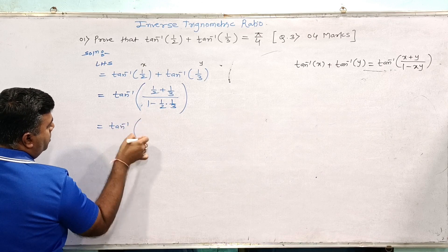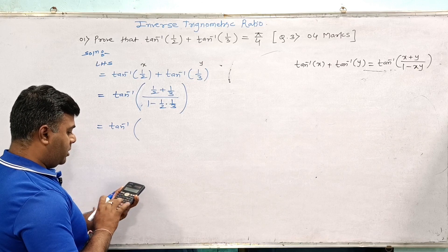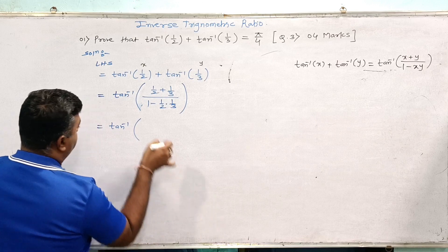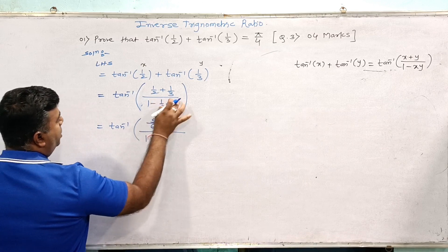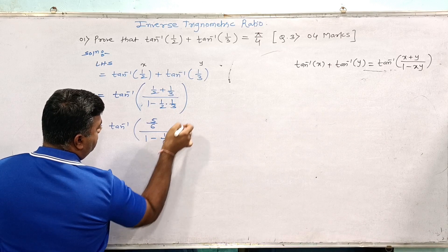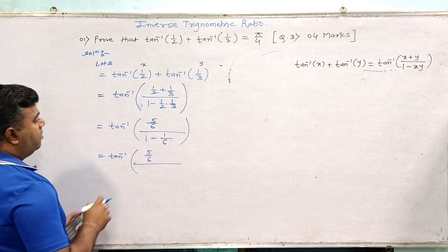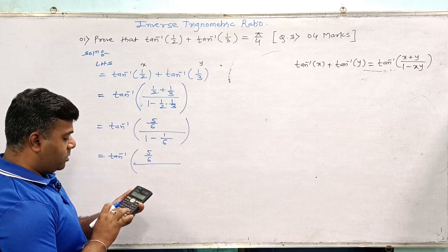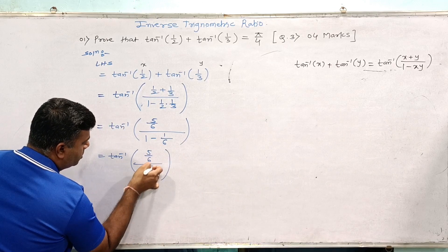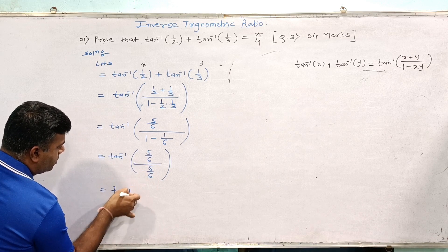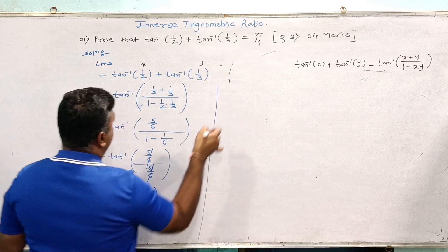So the numerator is 1/2 plus 1/3 equals 5/6. The denominator is 1 minus (1/2 times 1/3) equals 1 minus 1/6 equals 5/6. This gives tan inverse of (5/6 divided by 5/6), and the 5/6 cancels, leaving tan inverse of 1.